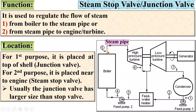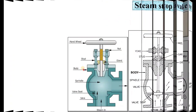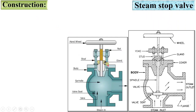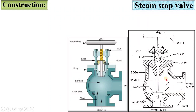Simply put: if the valve is near to the boiler, then it is called the junction valve, and if the valve is near to the turbine, then it is known as the steam stop valve. Now, the construction of the steam stop valve. Here you can see once again a very simple figure of the steam stop valve so that you can draw it in the examination.